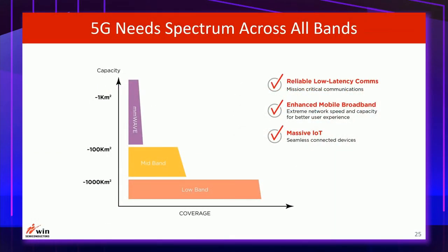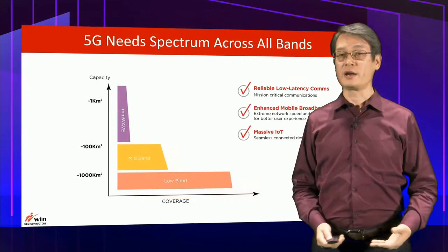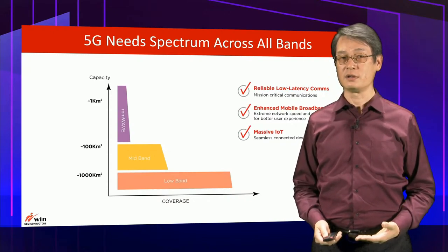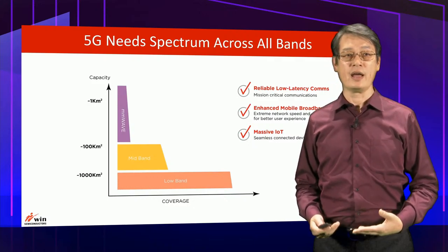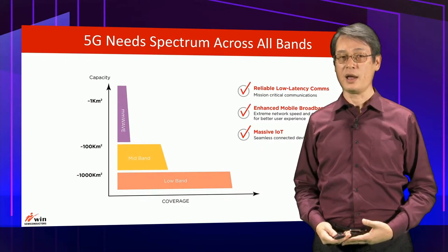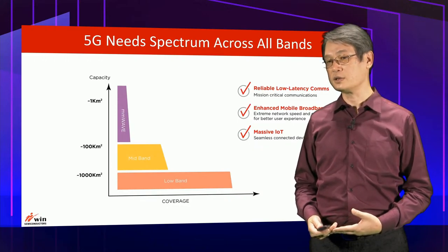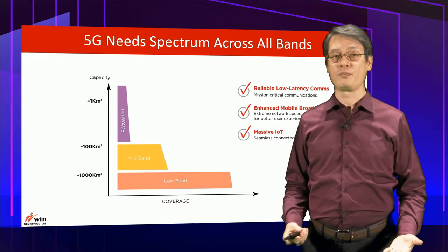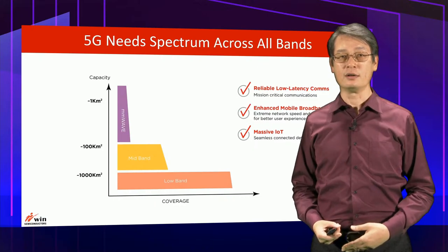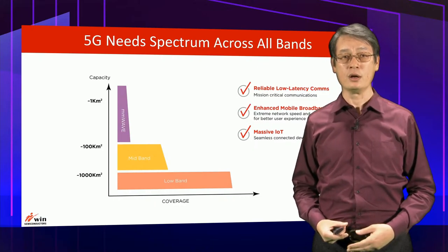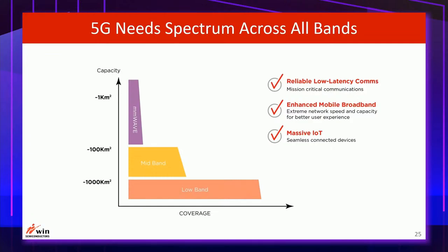5G is becoming the network to connect everyone and everything. It contains three important features: high reliability with low latency, enhanced mobile broadband, and massive IoT. In terms of frequency spectrum, 5G needs millimeter wave frequencies, around 30 GHz or above, to provide large bandwidth for high data rate transmission.